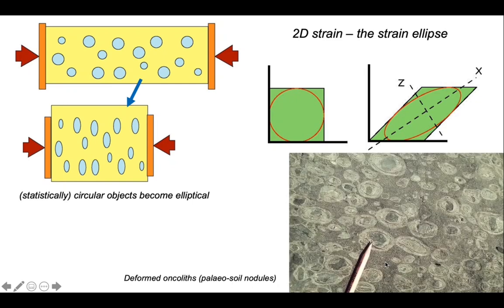Here's an example of some markers that we assume were originally circular in view, and they're now elliptical. So we measure the shapes of these features, we can quantify the 2D strain.